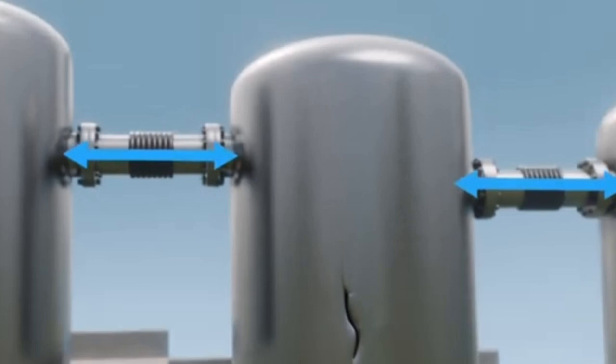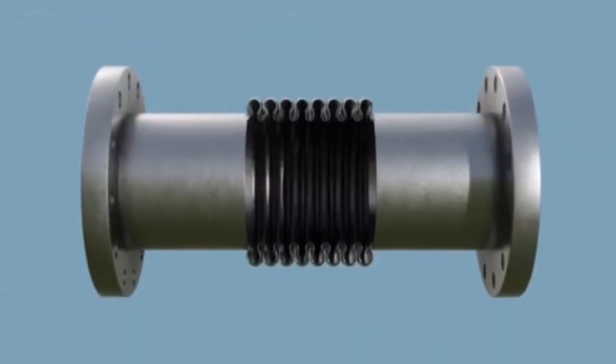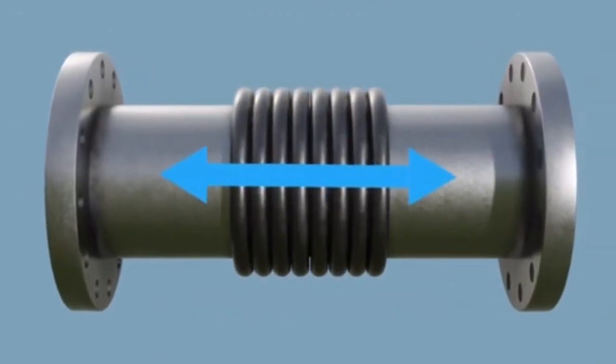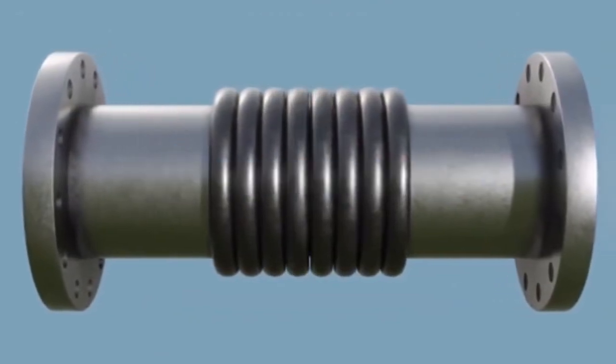Those vessels are acting as an anchor against the pressure thrust force of the bellows. When the bellows is pressurized it's going to want to extend. That's why it's got to be held back by those rigid points.